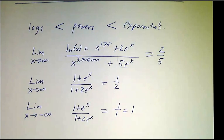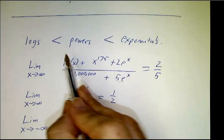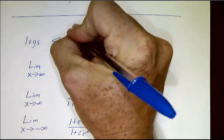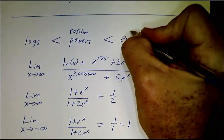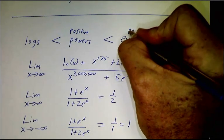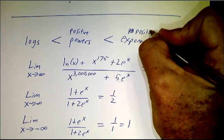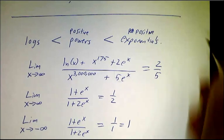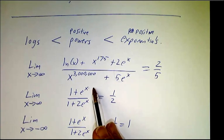So in comparing these races, I really should say logs grow slower than positive powers, which grow slower than positive exponentials. That is, e to a positive number grows, e to a negative number shrinks.